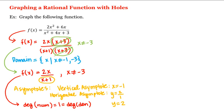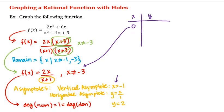Now let's find a few points on this graph on either side of the vertical asymptote. Let's make a table with x and y. When x = 0, we get y = 2(0)/(0+1) = 0, so y is also 0. When x = 1, we get y = 2(1)/(1+1) = 2/2 = 1, so y is 1.